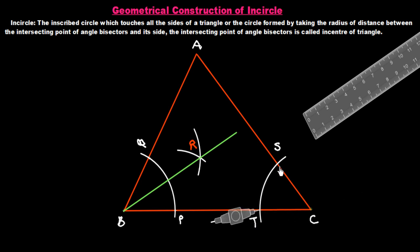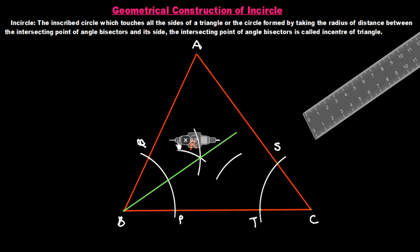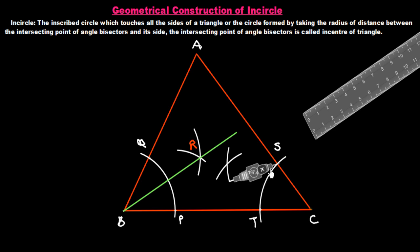Now we construct arcs from point S and point D one by one inside the triangle. We draw an arc from S, then put the needle at point D and draw another arc. Both arcs intersect each other, and we give the name U to this intersection point.